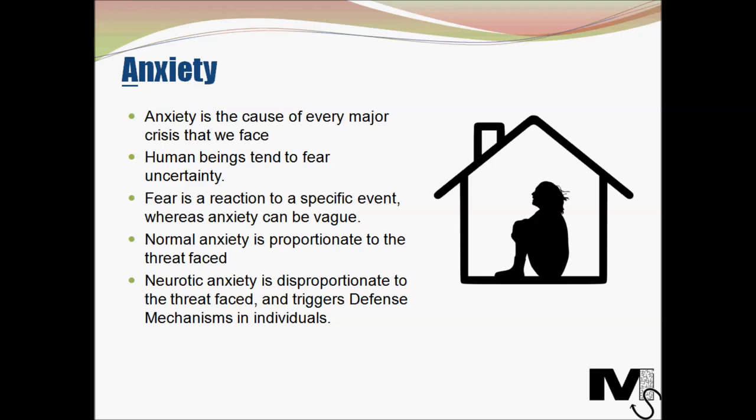Anxiety can also be of two types: normal anxiety and neurotic anxiety. If an anxiety is proportionate to the threat faced and does not require the services of defense mechanisms, it is considered normal anxiety. Normal anxiety is not intense and can actually be managed constructively. Neurotic anxiety, on the other hand, is intense — it is disproportionate to the threat actually faced and triggers defense mechanisms in individuals. People who suffer from neurotic anxiety aren't weak; they just suffer from psychological conflicts resulting mainly from poor childhood relationships or some sort of trauma.